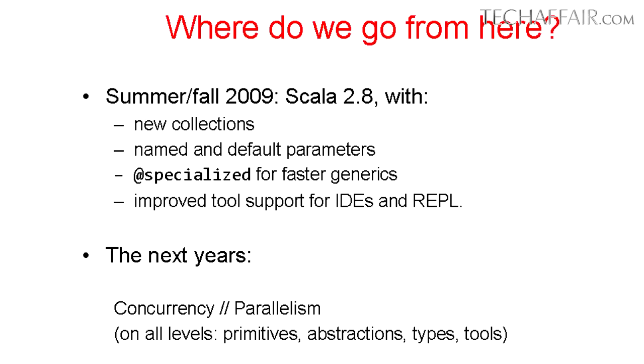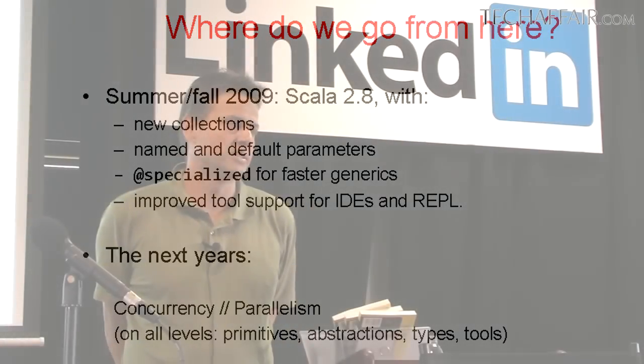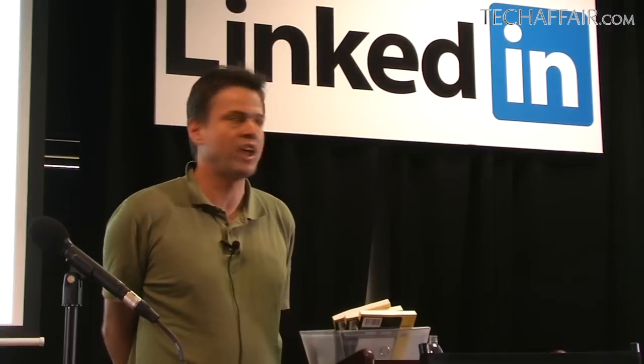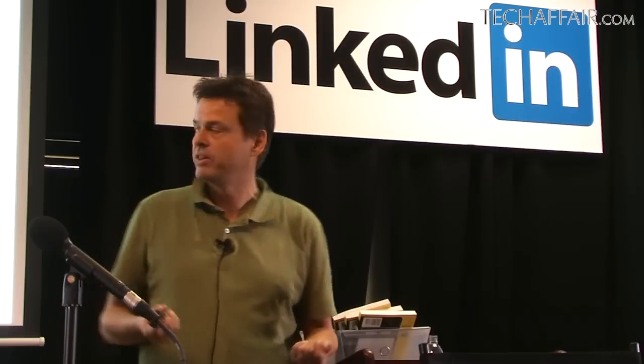We saw really quite dramatic improvements in our tests. It will also have improved tool support for both IDEs and the REPL. After that, for the next five years, what we plan to really concentrate on is concurrency on all levels. We already have actors, which is great, but there are other forms of parallelism and concurrency we want to study and combine — on the fundamental building blocks, on the types, and on the tools. Our goal is that in five years Scala will be the language of choice for programming concurrent systems and multi-core computers.